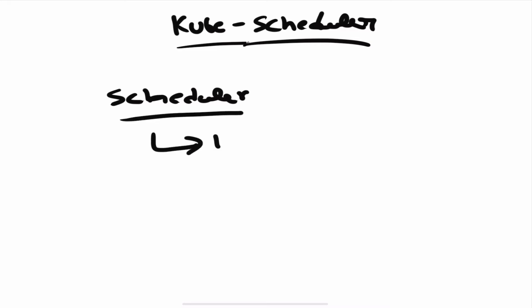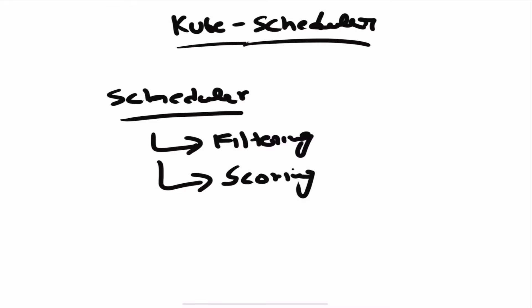The scheduler works in two stages. The first one is filtering and the second one is scoring. These are the two stages the scheduler uses to find the correct worker node to deploy a pod.